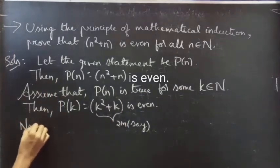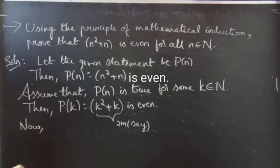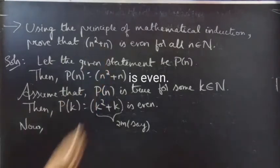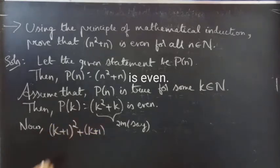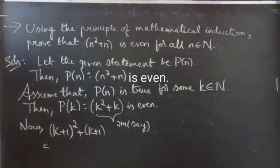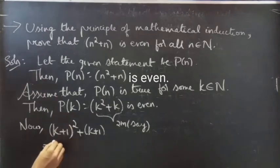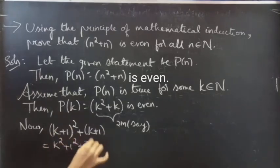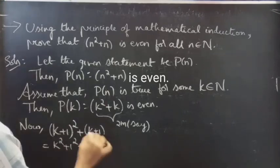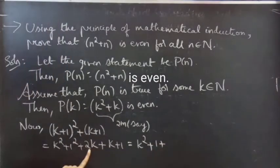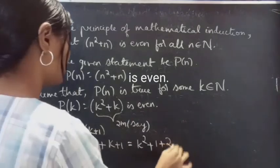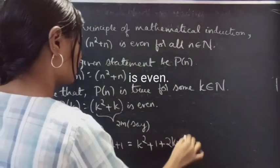Now we will show that the statement is true for n equals k plus 1. For that, we consider the given statement for k plus 1. Replacing n by k plus 1 gives: (k+1) whole squared plus (k+1), which expands to k squared plus 1 squared plus 2 times k times 1, plus k plus 1.